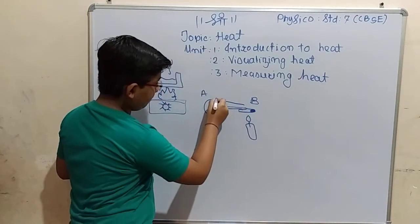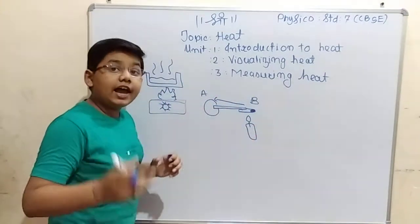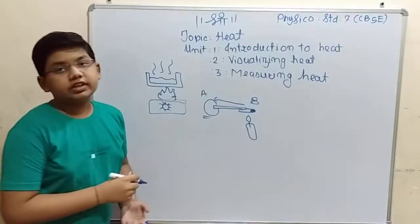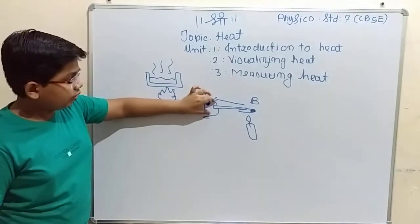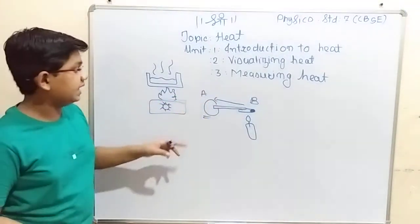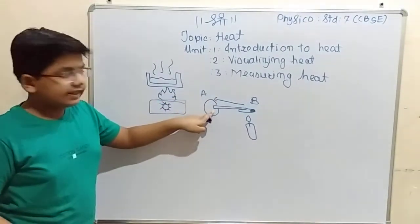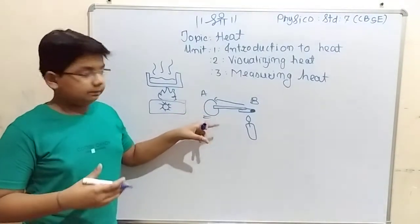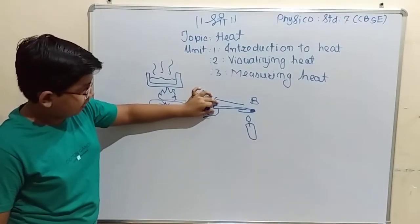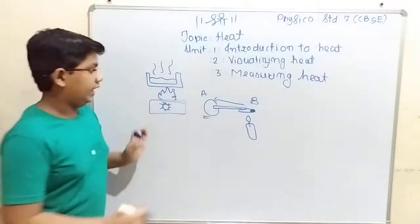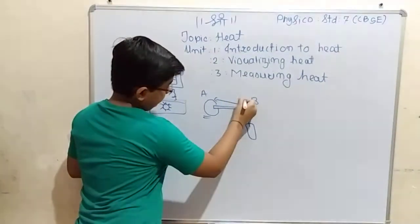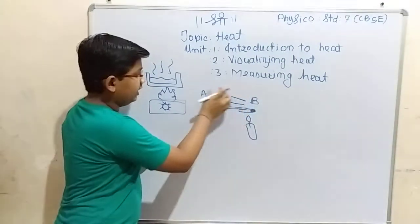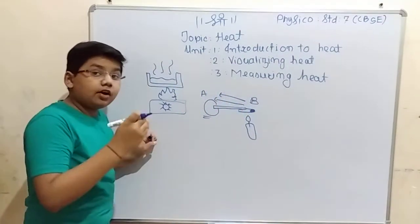Afterwards, it will travel from B to A. B is the higher concentration area of heat and A is the lower concentration area. If I hold it, after some time I will feel that area A is getting hot. That means heat is traveling from point B to point A, from higher concentration to lower concentration.